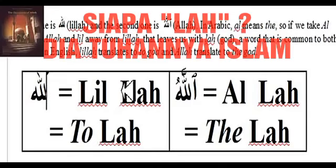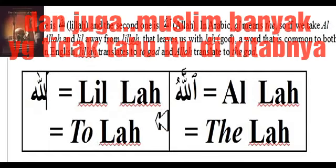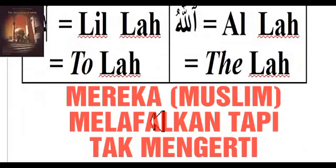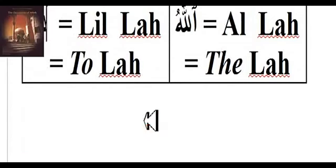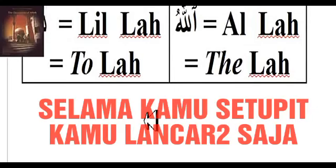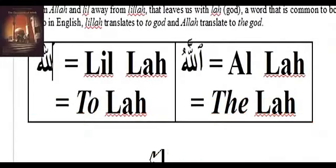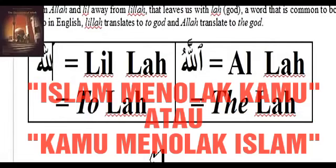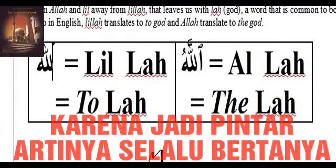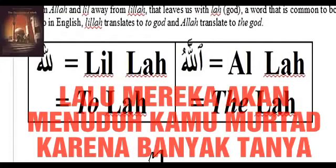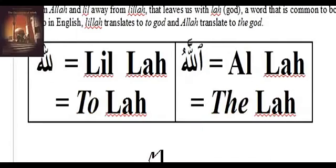So who is 'Lah'? This is the God of Islam. And by the way, even Muslims do not know that this is in their book, because Muslims, as usual, are people who recite but don't understand, and they don't care about understanding. The most important thing in Islam is just to be dumb and not question. The second you start being smart, Islam will reject you — either Islam rejects you, or you will reject Islam. Because being smart means you have to ask questions, and you will expose Islam by asking those questions.